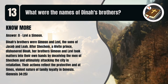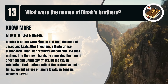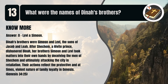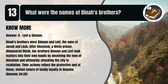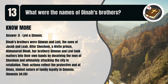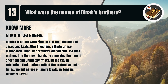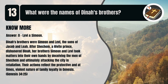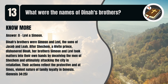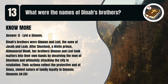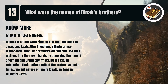That's B. Levi and Simeon. Dinah's brothers were Simeon and Levi, the sons of Jacob and Leah. After Shechem, a Hivite prince, dishonored Dinah, her brothers Simeon and Levi took matters into their own hands by deceiving the men of Shechem and ultimately attacking the city in retaliation. Their actions reflect the protective and, at times, violent nature of family loyalty in Genesis. Genesis chapter 34 verse 25.